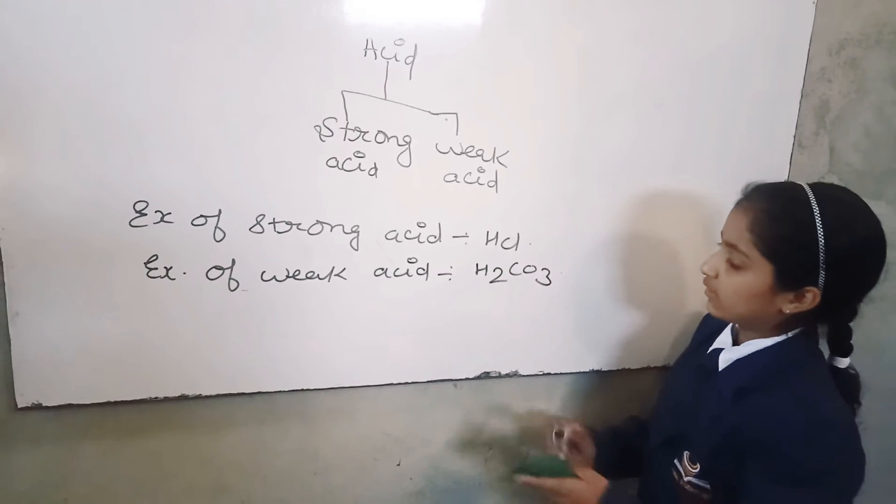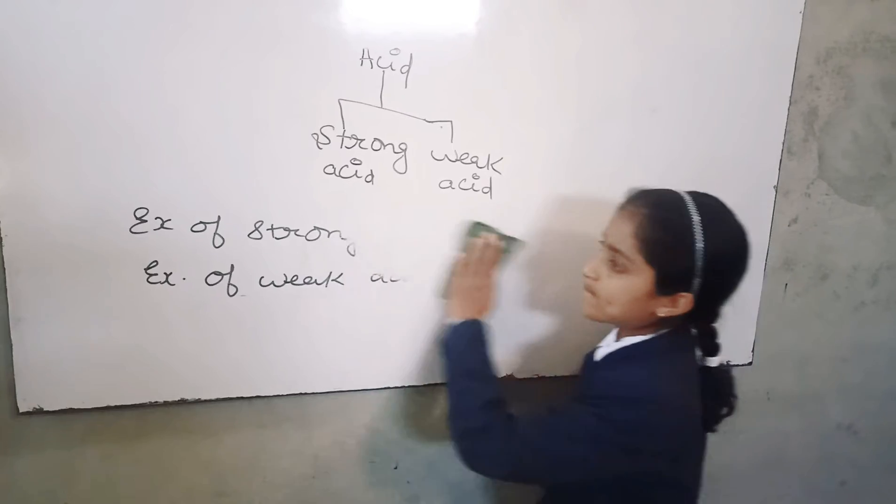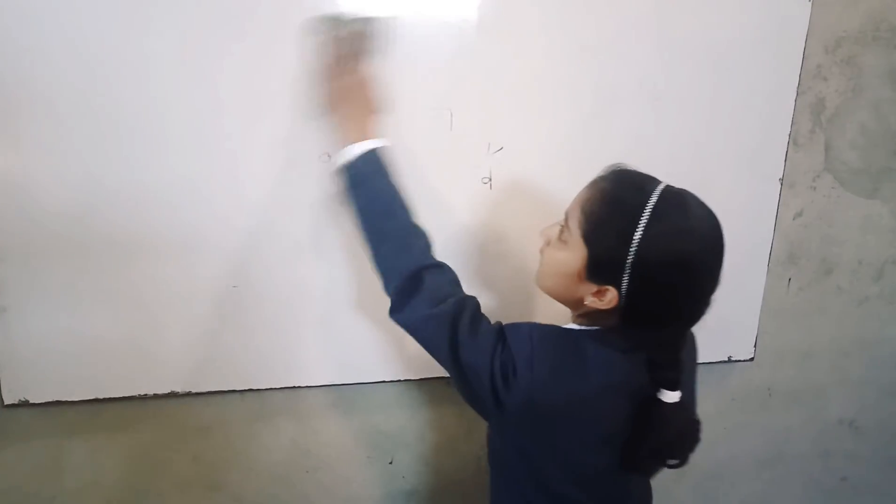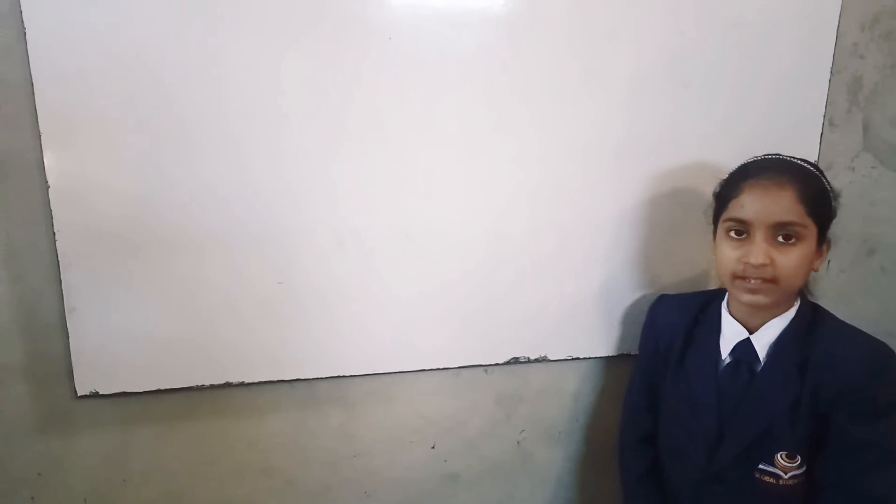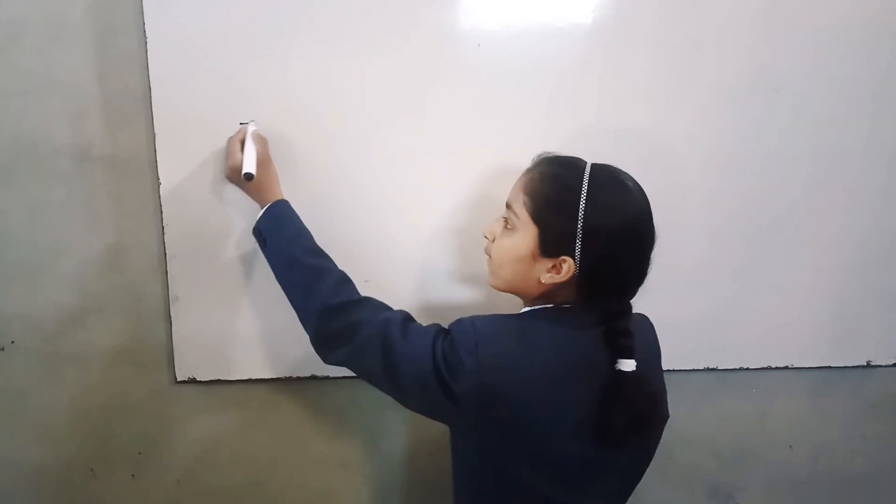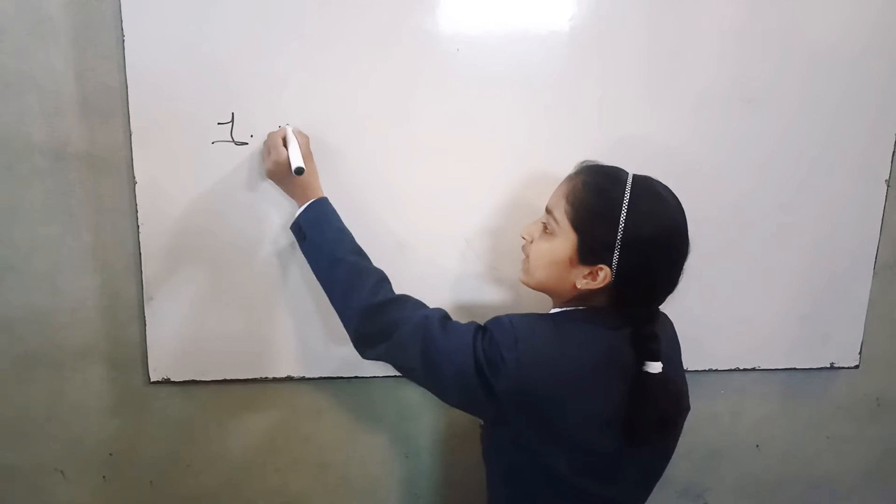Types of acid on basis of basicity. There are three types of acid on basis of basicity. First is monobasic acid.